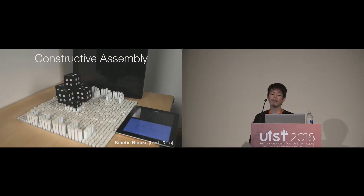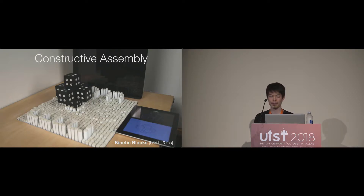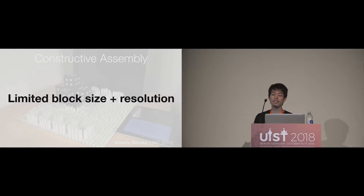To overcome this limitation, recent work explores using a shape display to assemble 3D shapes. For example, kinetic blocks investigate constructive assembly by actuating passive objects with an informed system. However, it still has a limitation in the size of blocks, which currently need to be four times bigger than each pin, making it difficult to achieve fine resolution with smaller blocks.